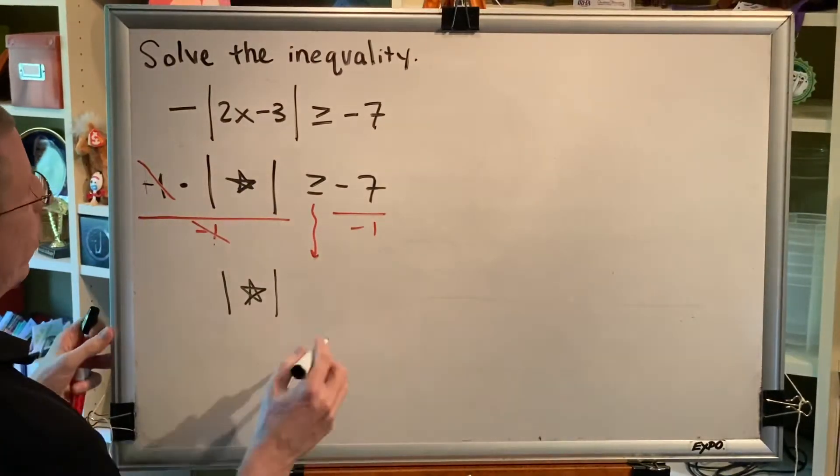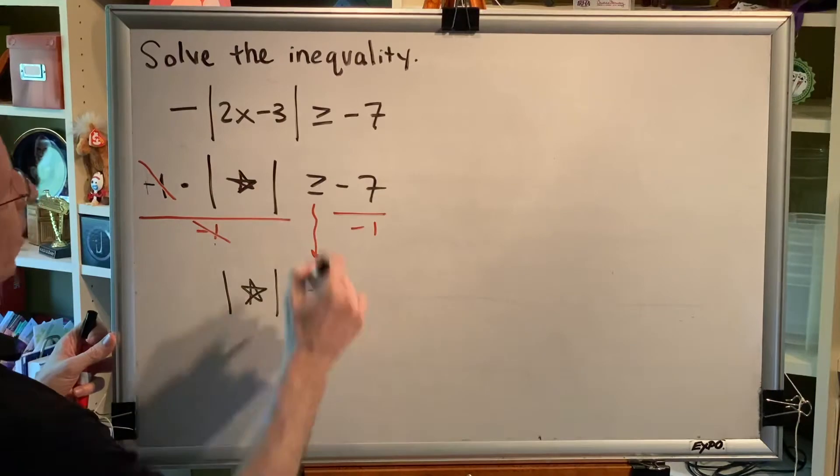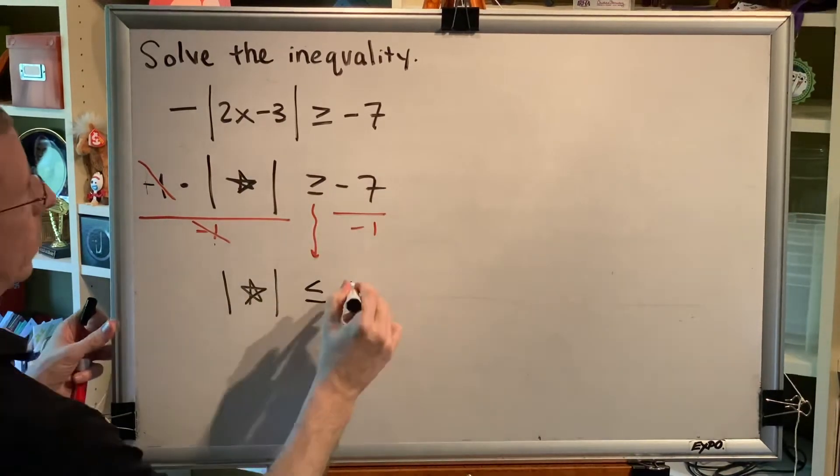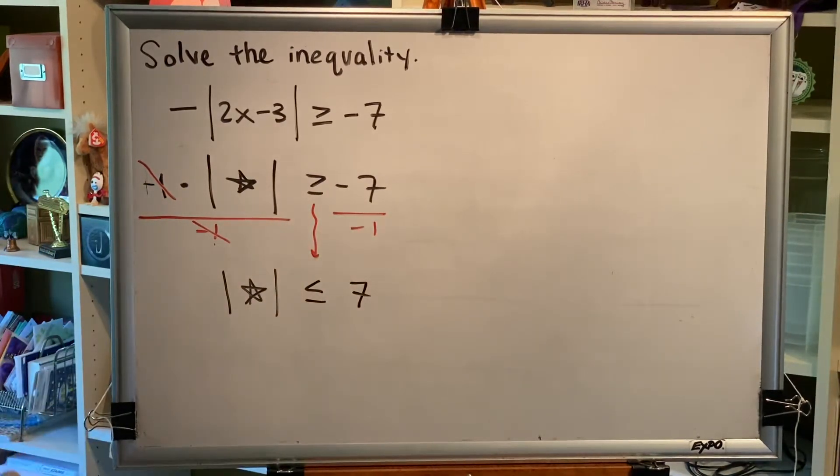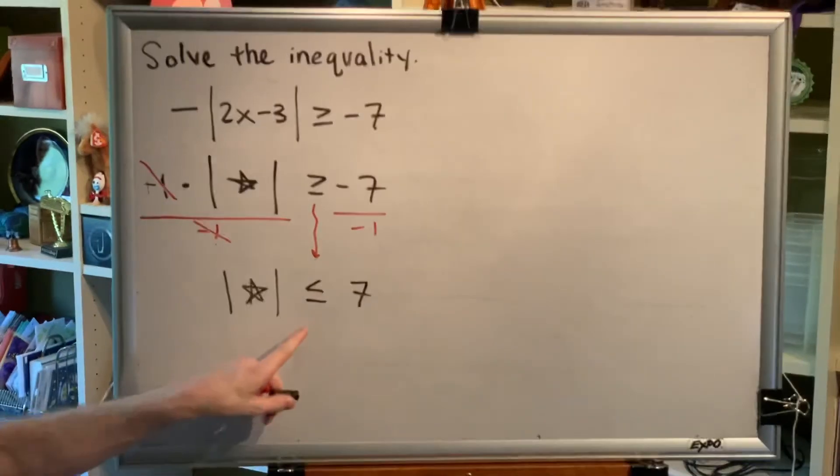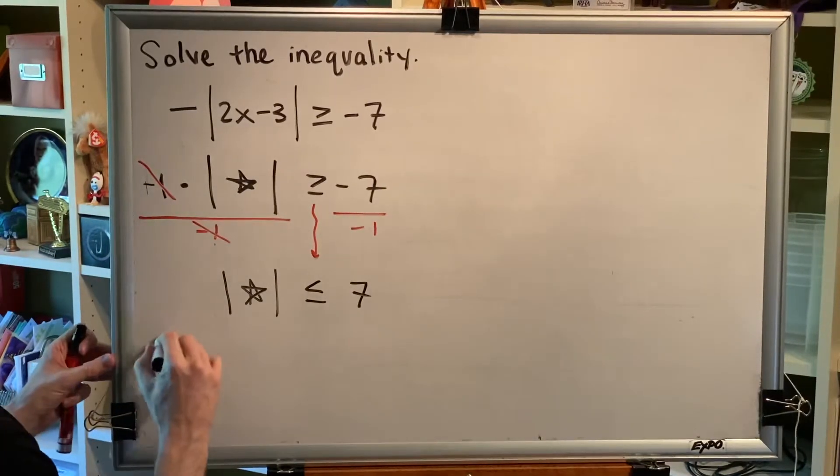So, I have the absolute value of star is less than or equal to, because I'm flipping my sign, 7. All right, so distance is less than or equal to 7. That's like a dog on a leash.